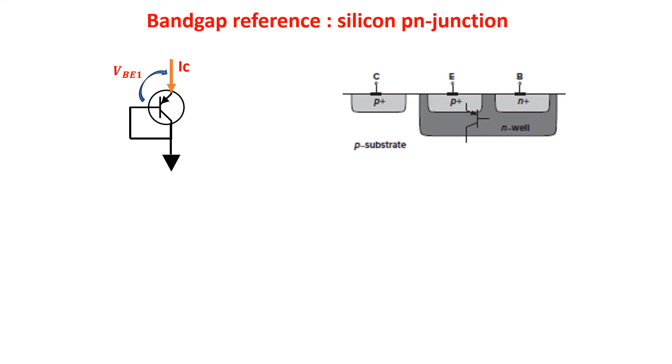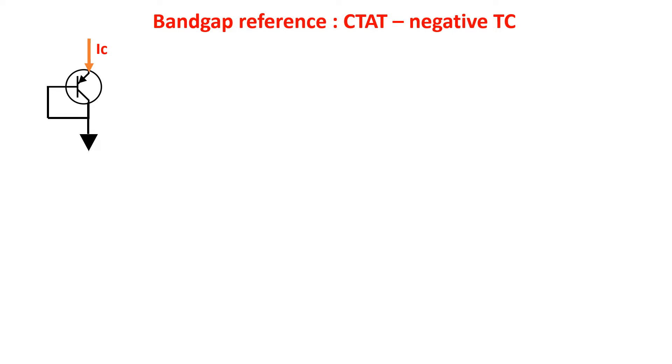We already know that a forward biased PN junction has a negative temperature coefficient. If temperature goes up, we need a lower voltage to keep the same IC current. Now let's see in detail the negative temperature coefficient of the PN junction.